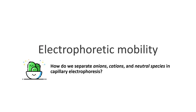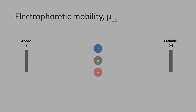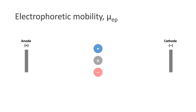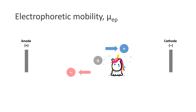Hey guys, Francis here. In this video we are going to look at electrophoretic mobility, which is the second key mechanism in capillary electrophoresis that governs the separation of charged analytes. By the end of this video we will be able to answer these questions: how do we separate anions, cations, and neutral species in capillary electrophoresis? When the voltage is applied across the capillary, the cations will be attracted to the negatively charged cathode, the anions will be attracted to the positively charged anode, while the neutral species remain stationary since they are not affected by the applied electric field. There are two major factors that affect the electrophoretic mobility of a charged analyte.